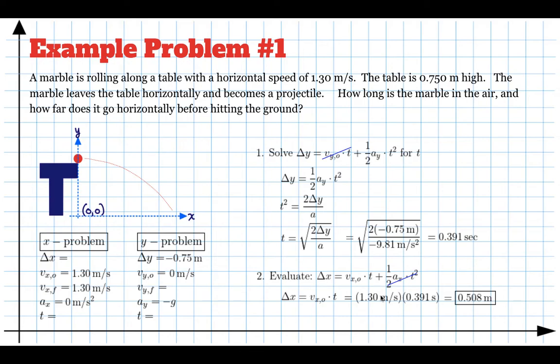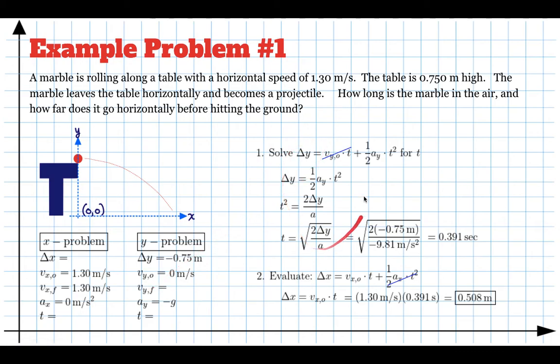So that's the general strategy: horizontal motion is independent of vertical motion. Make one variable list horizontally and one for vertical, solve the y problem for time, then use that time to solve the x problem for the horizontal distance.